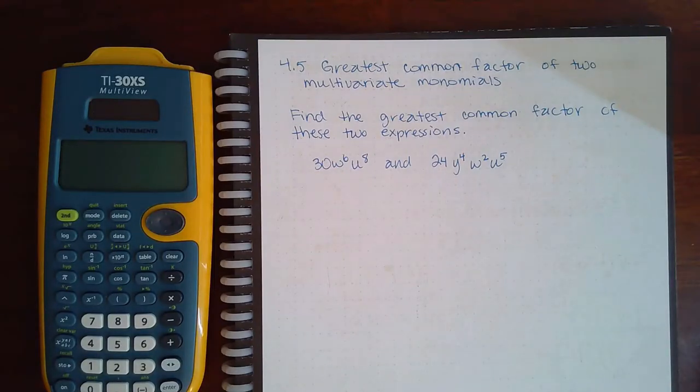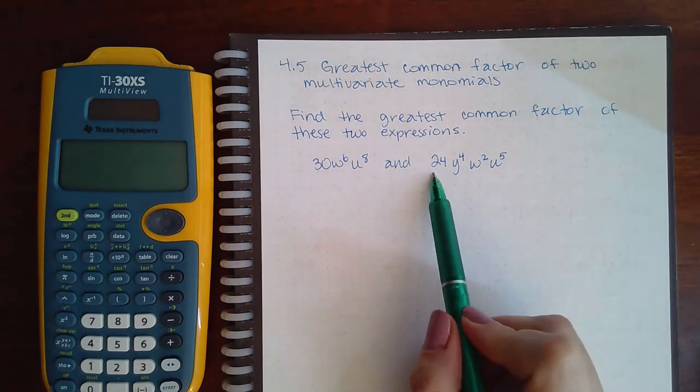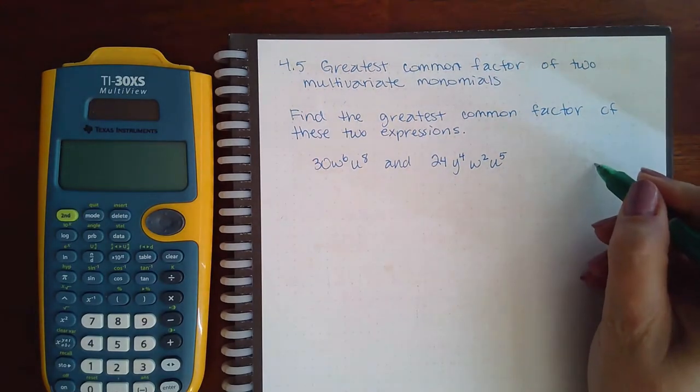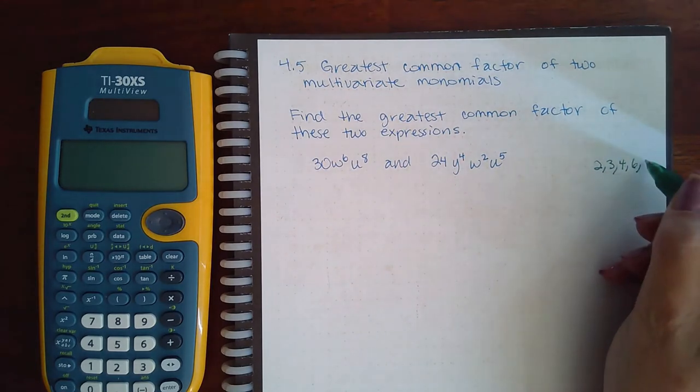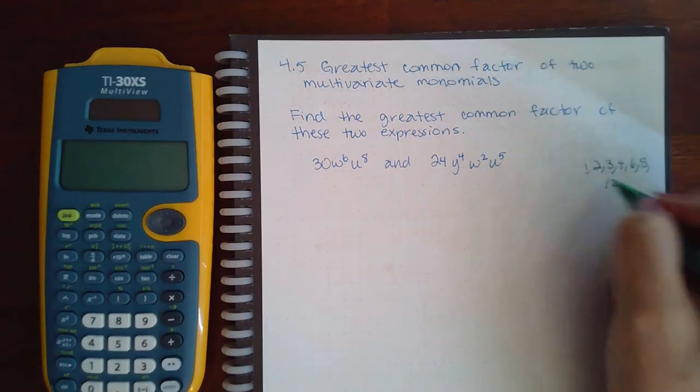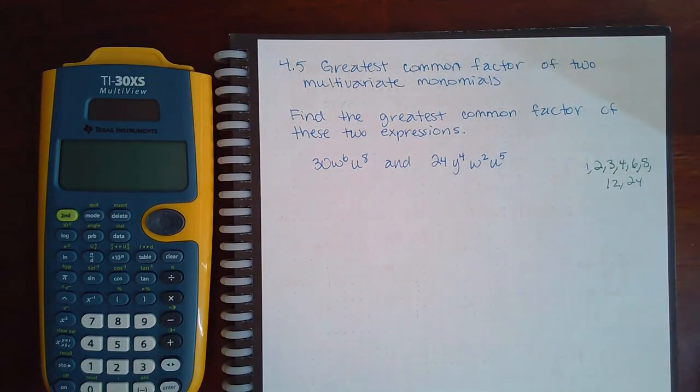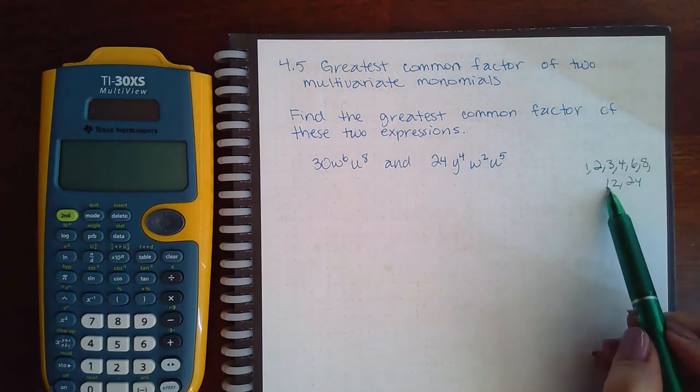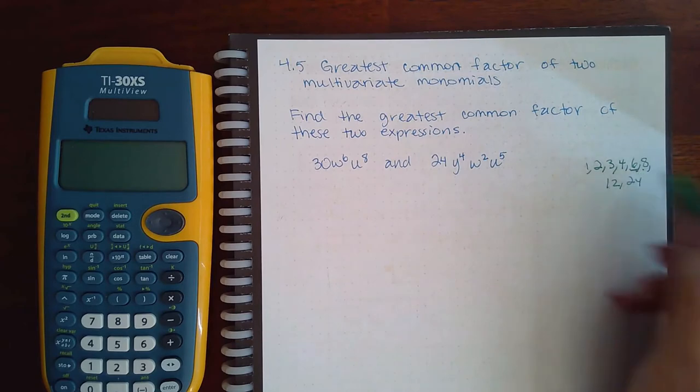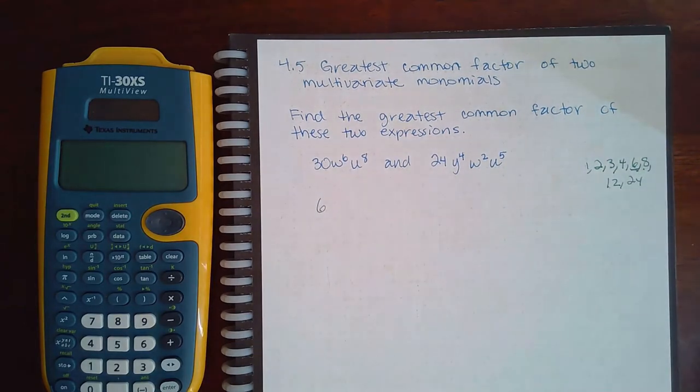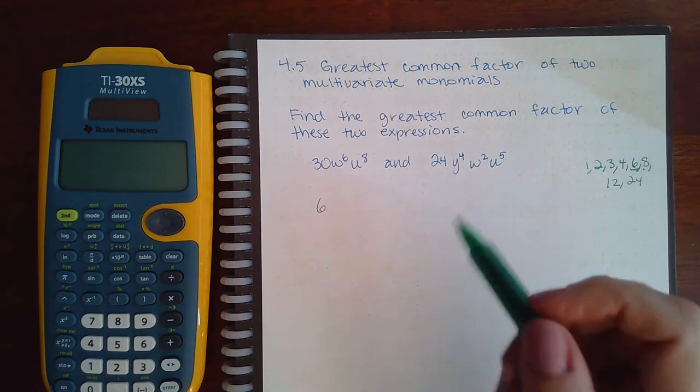Here we have 4.5: greatest common factor of two multivariate monomials. Between the numbers, the factors of 24 are 2, 3, 4, 6, 8, and 12, and then of course 1 and 24. But out of all of those, 12 will not go into 30, 8 will not go into 30, 6 will go into 30. So it does appear that 6 will be the greatest common factor as far as the number is concerned.